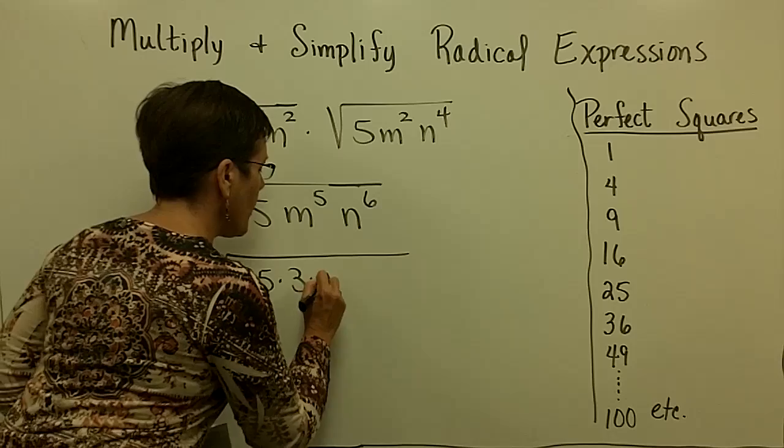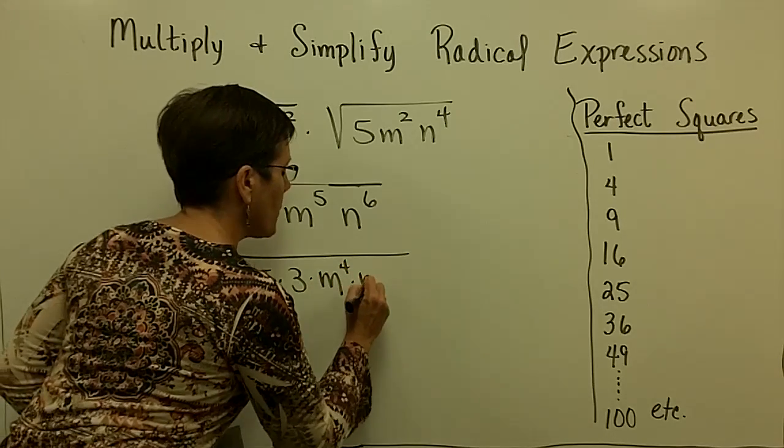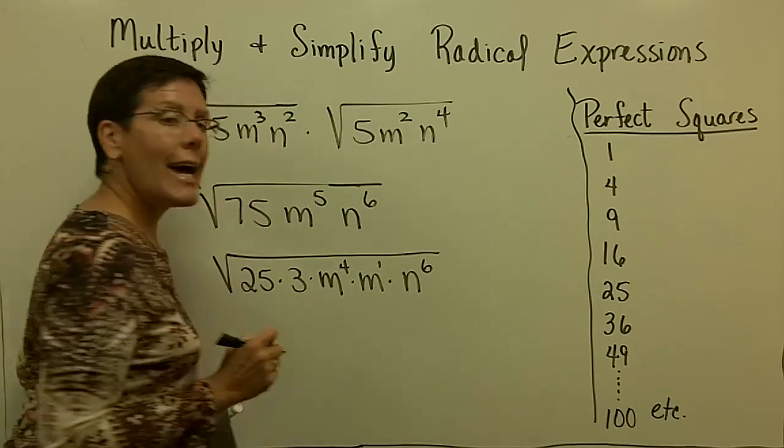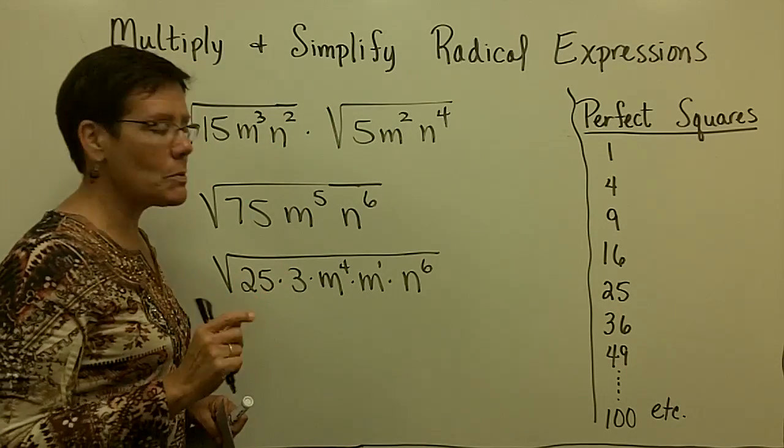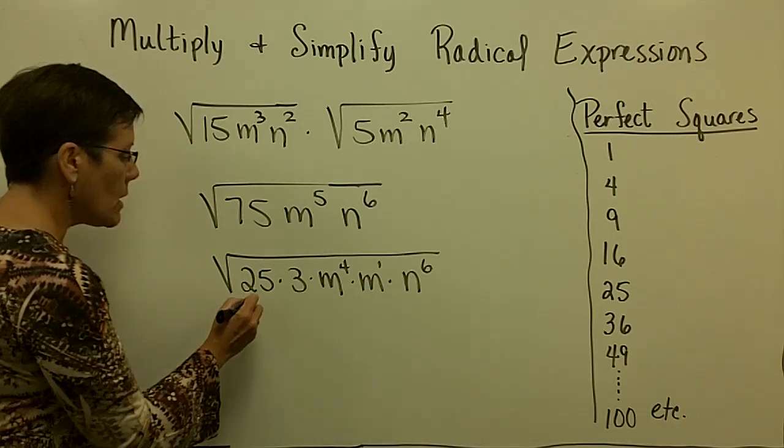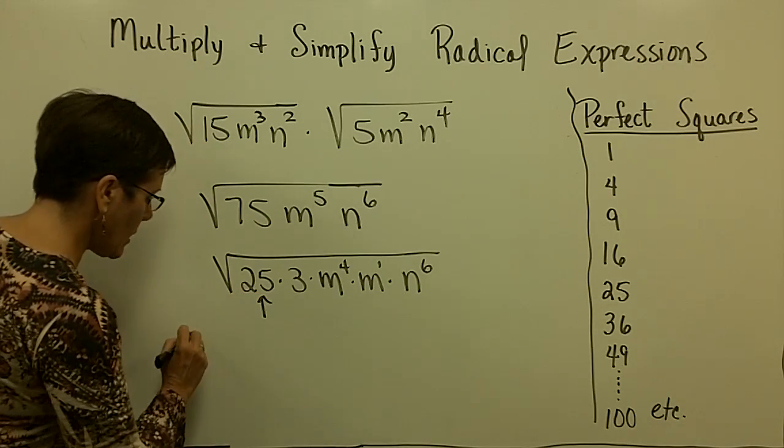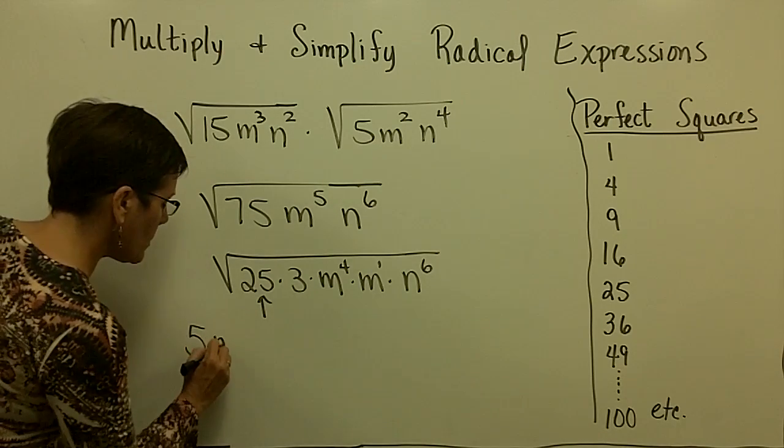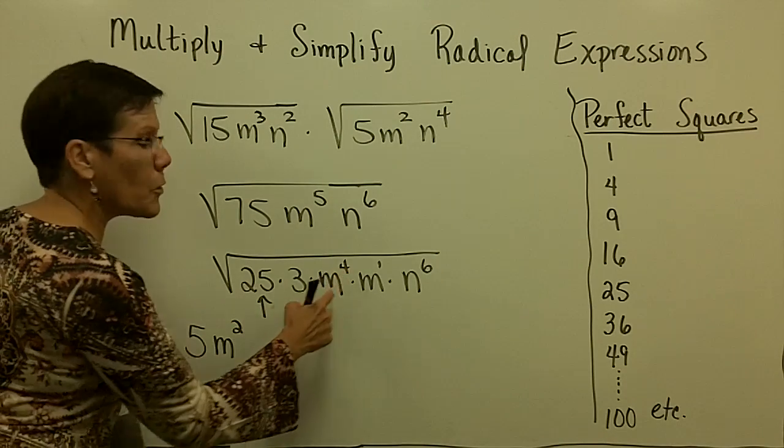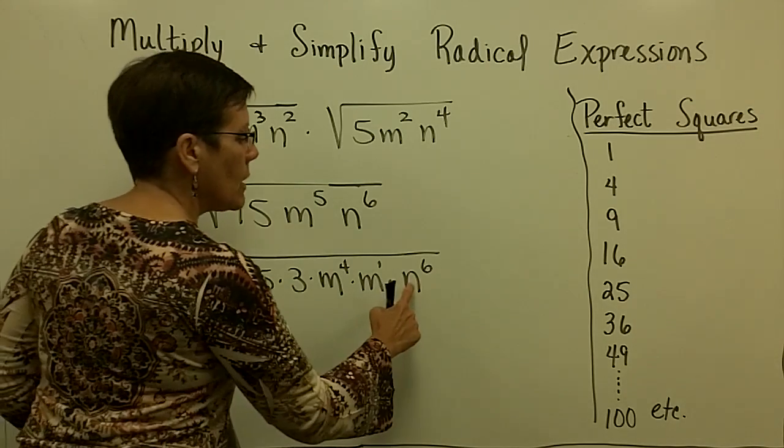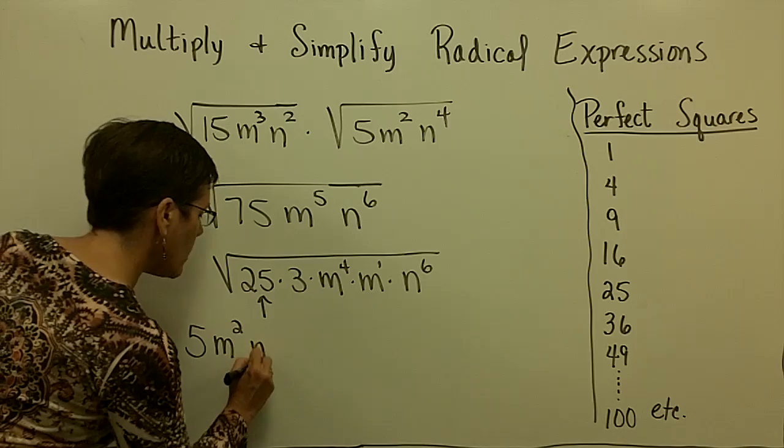This m to the 5th, I'm going to call it m to the 4th times m to the 1st. And n to the 6th, I don't need to alter in terms of breaking it into factors because it's divisible by 2, its exponent. This right here comes out as a 5. This right here comes out as an m squared because 4 divided by 2 is 2. m squared times m squared is m to the 4th. This one comes out as n to the 3rd.